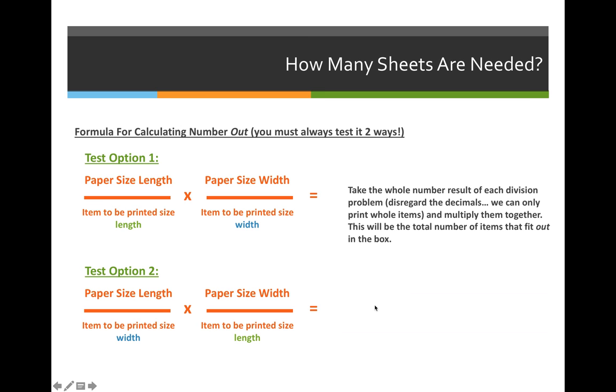The steps that we use to calculate the number out I like to call the option one option two scenario. We're going to take the length and width of our paper and put it on the top part of the formula. So we'll divide the length of the paper by the length of the item that you're printing and then the width of the paper divided by the width of the item that you're printing.